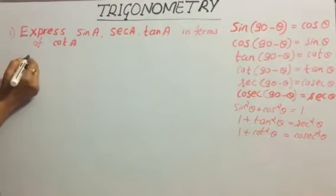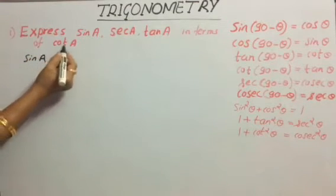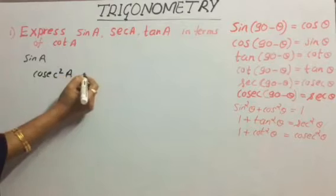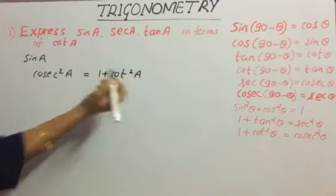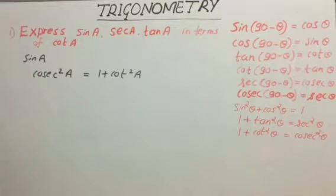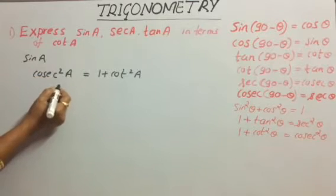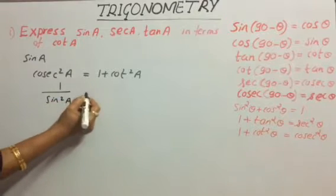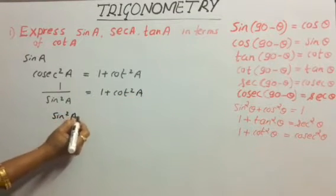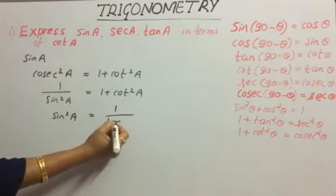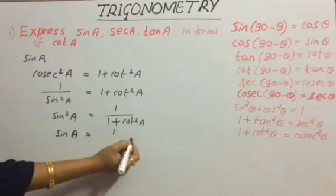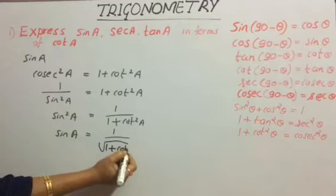Now we will consider sin a. We have to represent sin a in terms of cot a. Let us use the identity cosec²a = 1 + cot²a. We know that cosec²a = 1/sin²a because cosecant is the reciprocal of sin. So we can write 1/sin²a = 1 + cot²a, which gives sin²a = 1/(1 + cot²a). Taking the square root, sin a = 1/√(1 + cot²a).